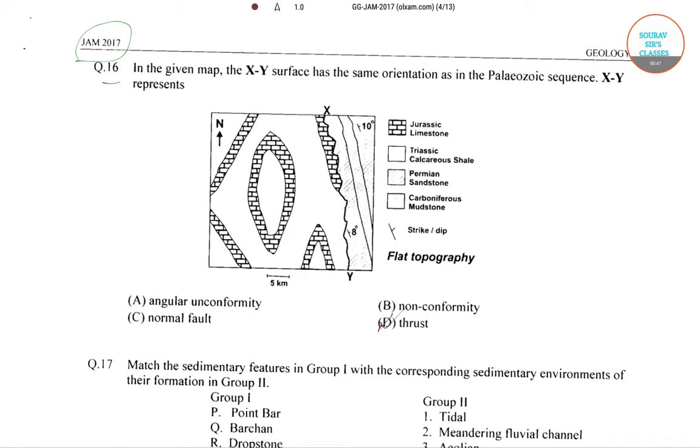What is thrust? A thrust fault is a break across which older rocks are pushed above the younger rocks. It is a break in the earth's crust across which the older rocks are pushed above the younger rocks. The answer to this question is option D, that is thrust.